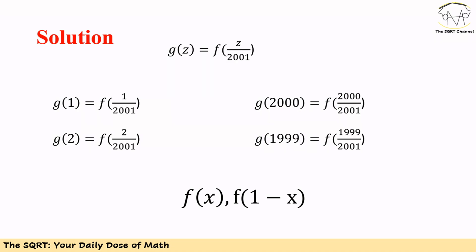More precisely, recall that g of z is defined as f of z over 2001. So g of 1 is f of 1 over 2001 and g of 2000 is f of 2000 over 2001. Similarly, g of 2 is f of 2 over 2001, and g of 1999 is f of 1999 over 2001. In each case, we are calculating f of x and f of 1 minus x.